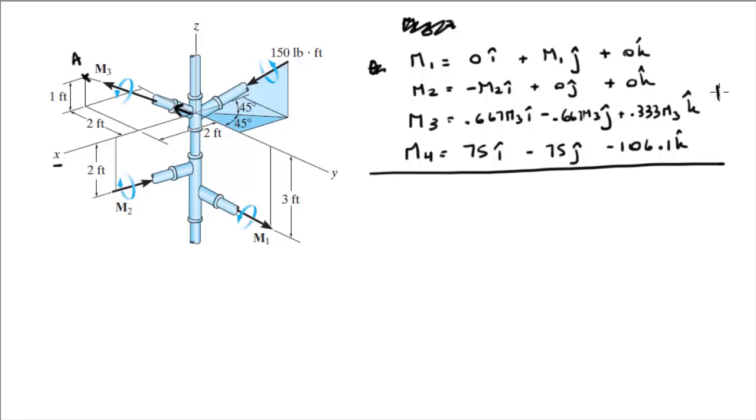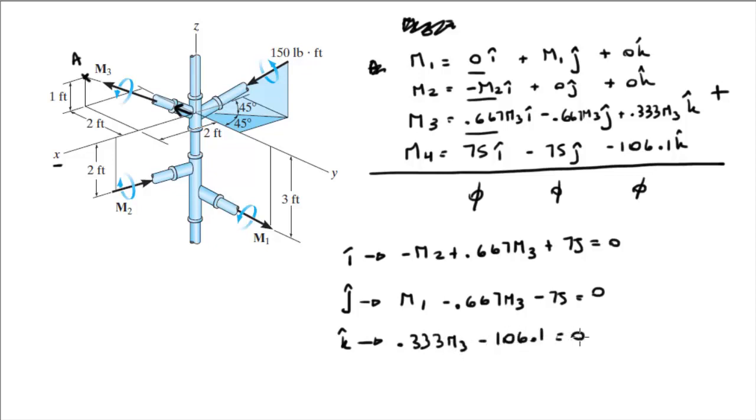And you know that when you add this all up, they want you to cancel out. That's what the exercise says. The sum has to be 0. So basically, we're going to build three equations in the i, in the j, in the k. In the i, is 0 minus M2 plus 0.667M3 plus 75 is equal to 0. So minus M2 plus 0.667M3 plus 75 is equal to 0. In the j, we have M1 minus 0.667M3 minus 75 is equal to 0. And in the k, we have 0.333M3 minus 106.1 is equal to 0. The last equation you can solve for M3 right off the bat, and you get that M3 is equal to 318.6 foot-pounds.